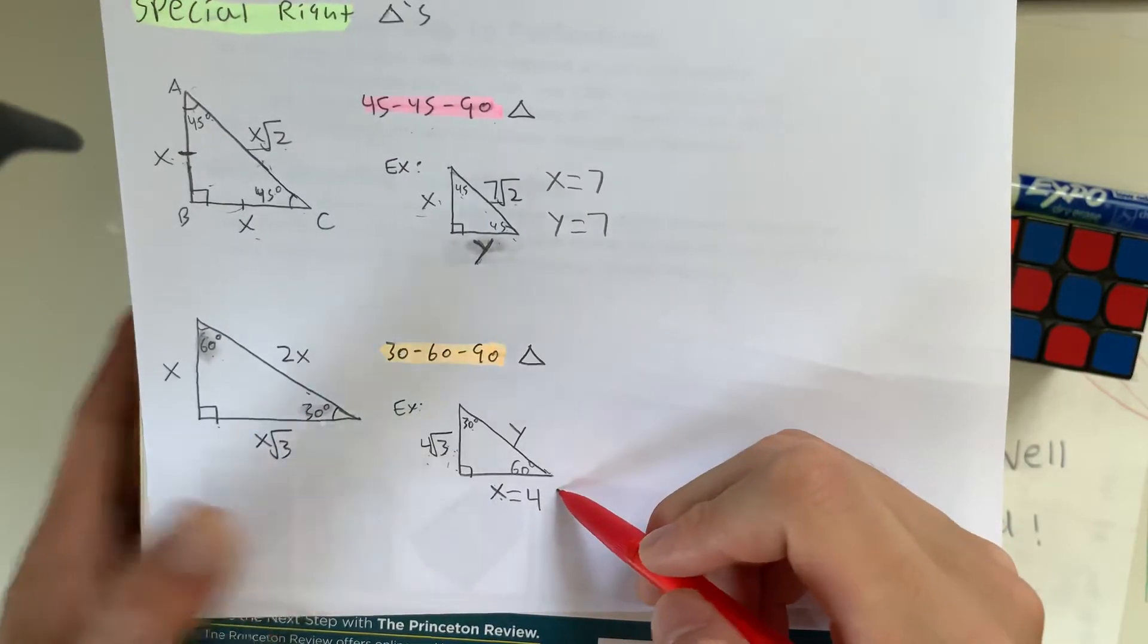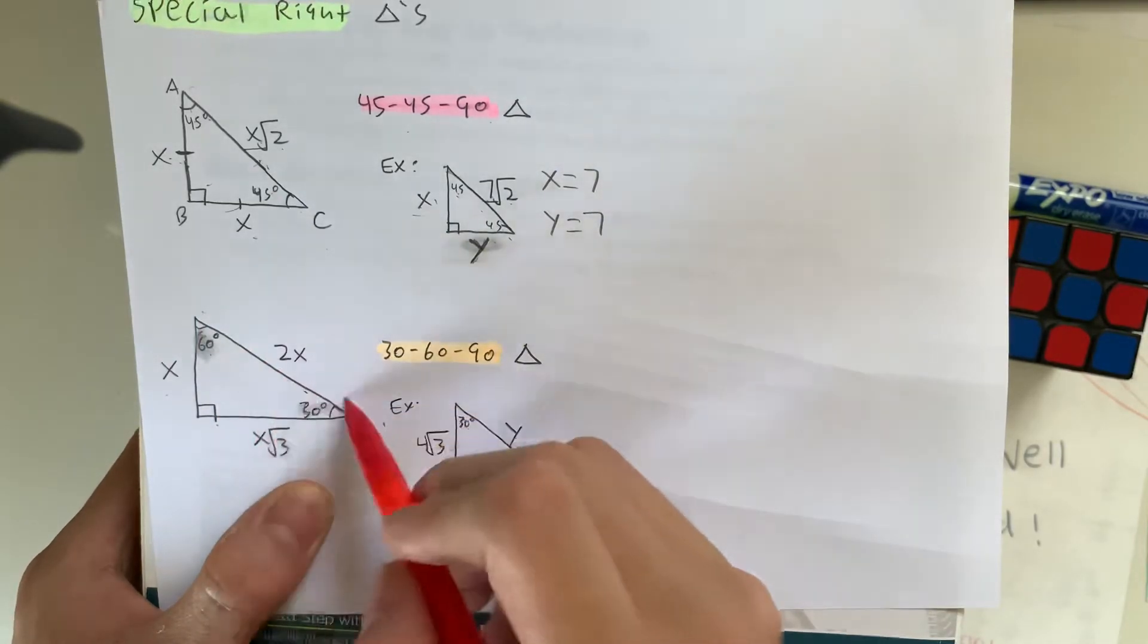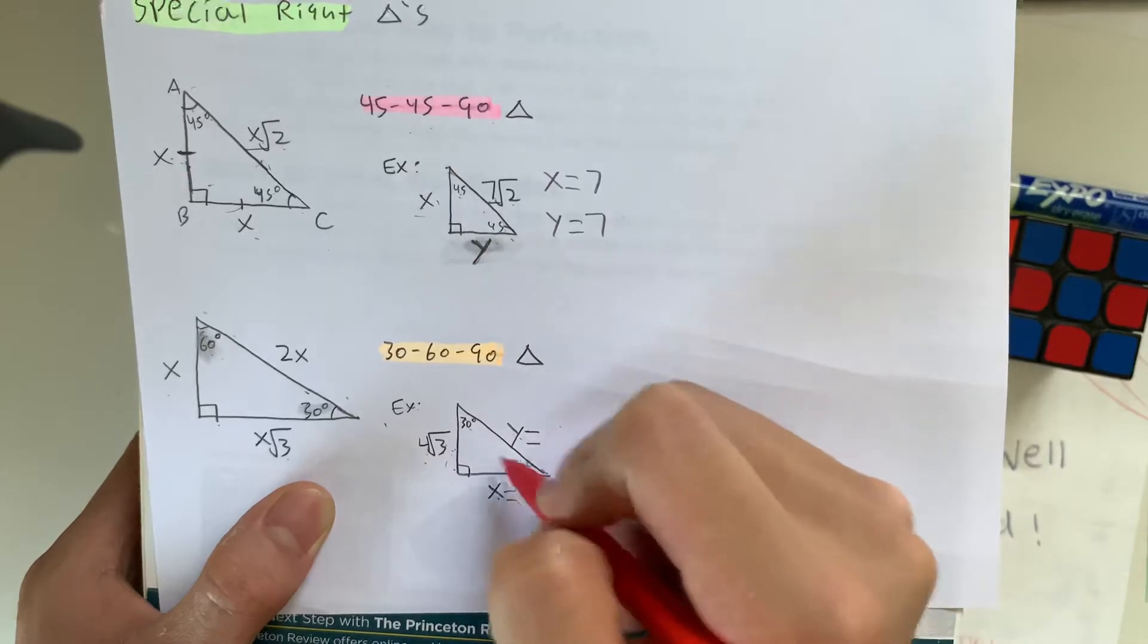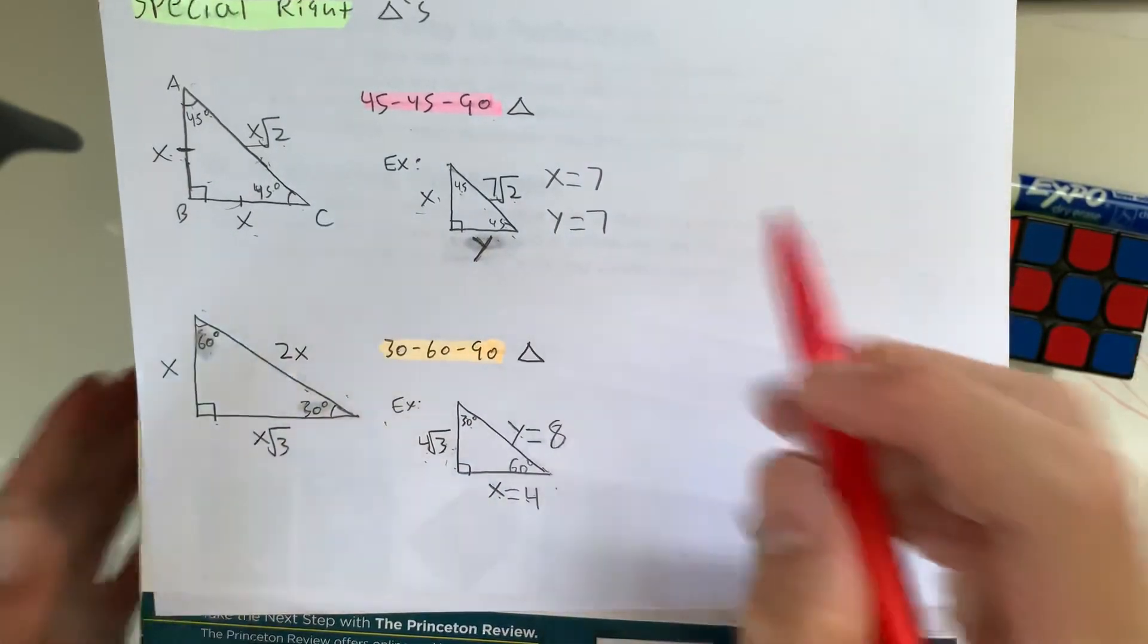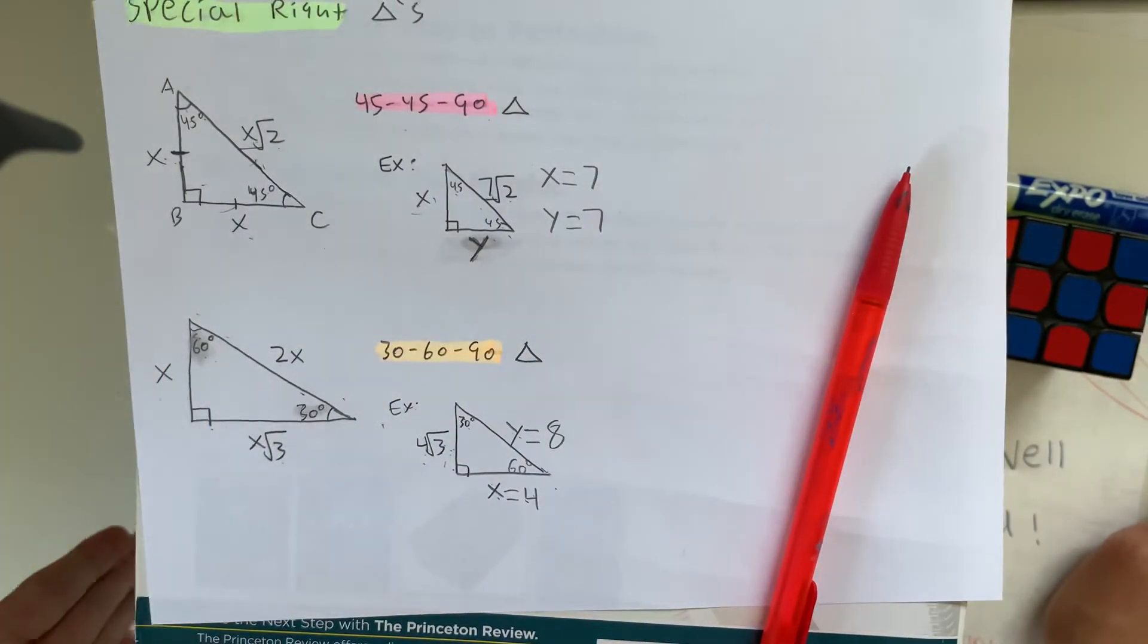And known that x is equal to 4, the value of the hypotenuse is 2x, meaning the value of y in this case is going to be 2 times 4, which is 8. So that's how you're going to use these two formulas to figure out the lengths of two special right triangles.